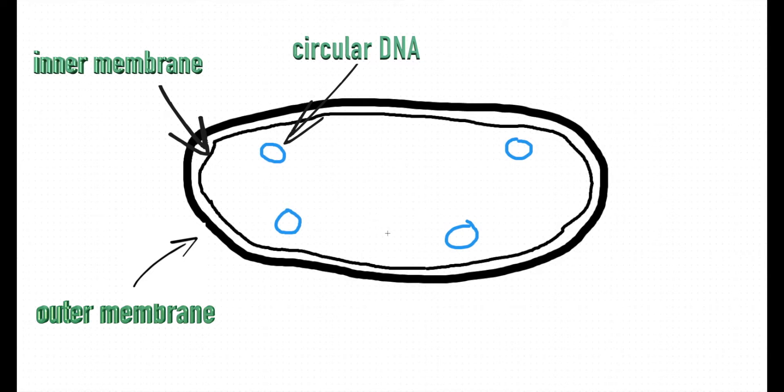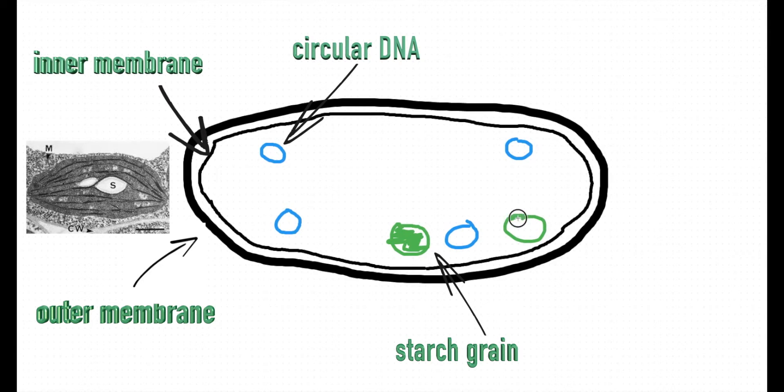Also present in the chloroplast are starch grains, often observable under microscopes as dark and grainy structures.